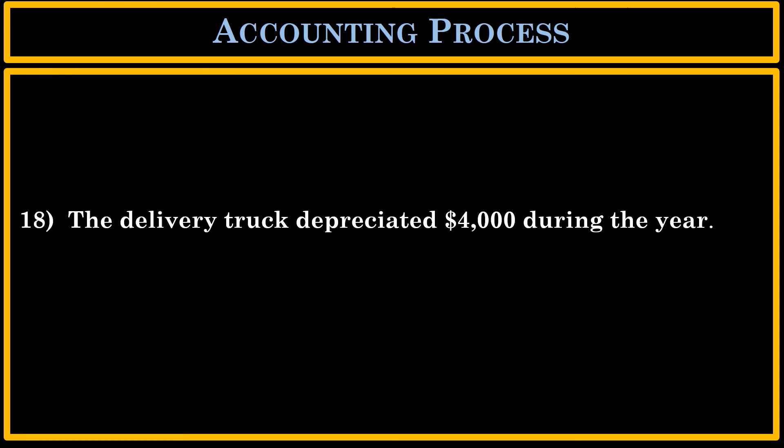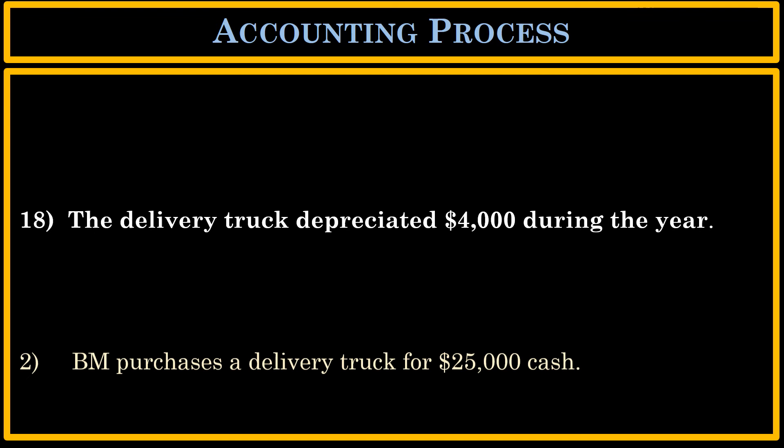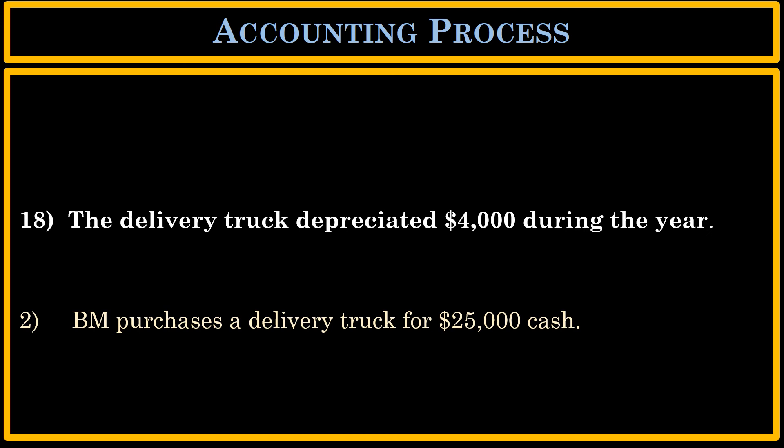In this transaction we introduce the concept of depreciation. The delivery truck depreciated $4,000 during the year. In transaction 2, we bought the delivery truck for $25,000 cash. When we bought the truck, we did not account for it as an expense — it was cash out and we created an asset. The idea is that we have to slowly expense this $25,000 over time. As we are using up the truck, we have to expense it. That is called depreciation.